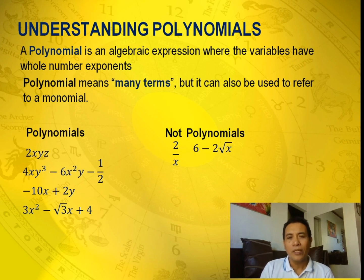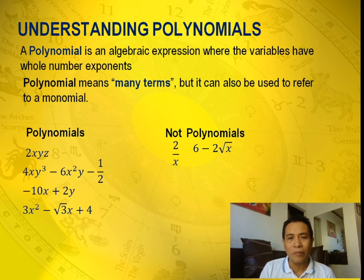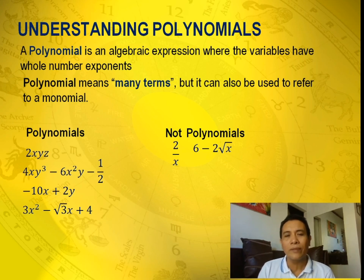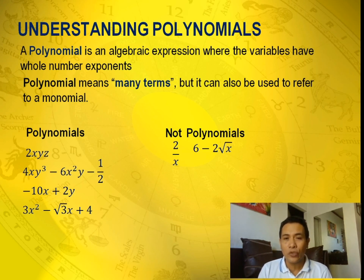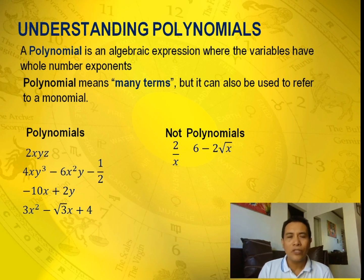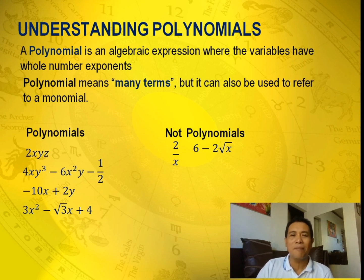6 minus 2 times the square root of x. Take note that our variable here is the square root of x. When you convert the square root of x to exponential form, it becomes x raised to 1 half. And 1 half is not a whole number, so that's not an example of a polynomial.